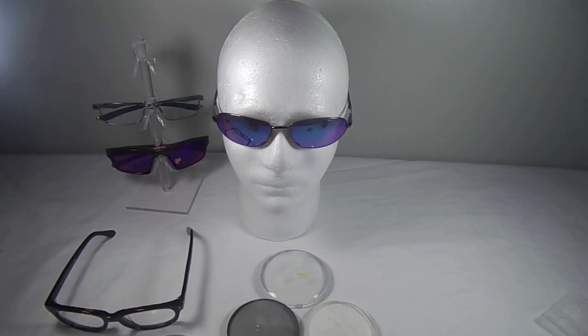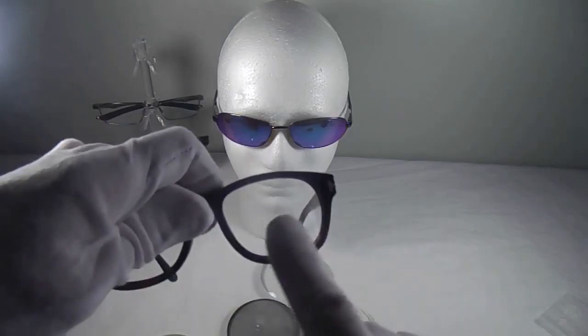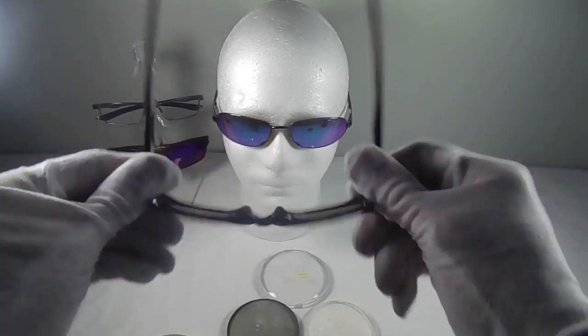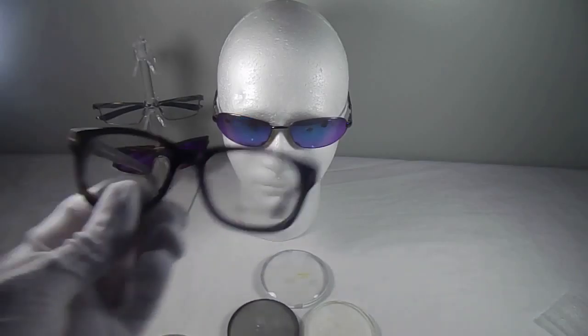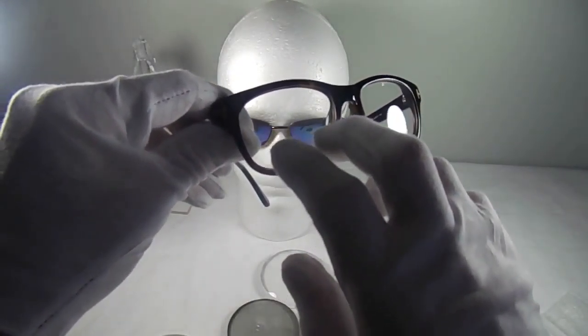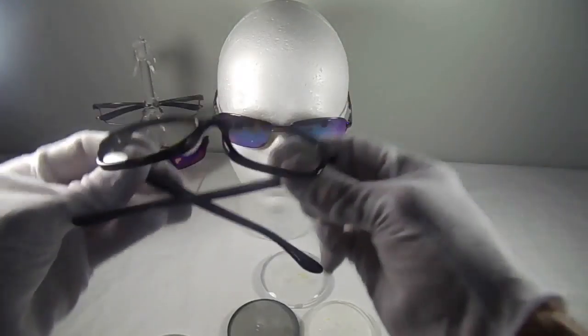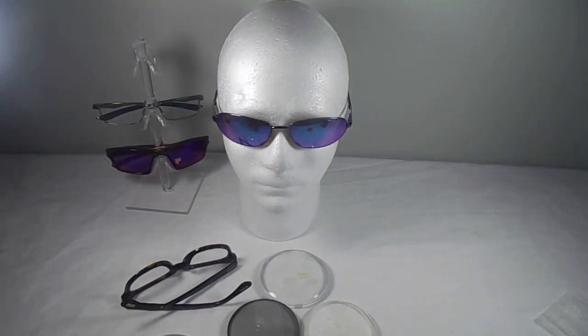But again, you can't really manipulate the width of the actual bifocal or the corridor, which is that intermediate portion. That's the advantage of a free form like an Autograph 2 and 3, the HD, the Seiko Surmount, because you can actually manipulate the design to meet the need of your customer. For example, if the customer lets us know that they want a lot of that intermediate, that middle range to be very wide to do a lot of work on a computer, then we can actually modify or manipulate that design to give them more of that intermediate area. Same thing with the reading. If they do a lot of reading, not as much computer work, then you can reverse that and you can actually modify their reading zone to be as wide as possible. That's the advantage of your free form design, completely customizable and just absolutely probably it really is the best technology that's out on the market today.